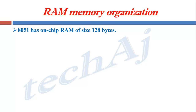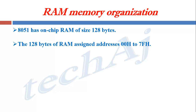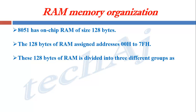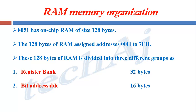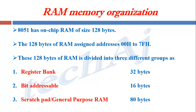The 8051 has on-chip RAM of size 128 bytes. The 128 bytes of RAM are assigned addresses from 00H to 7FH. This 128 bytes of RAM is divided into three different groups. First, register bank, which takes 32 bytes of memory. Second, bit addressable RAM, which takes 16 bytes of memory. And third, scratchpad, which is also called as the general purpose RAM, which takes 80 bytes of RAM memory.